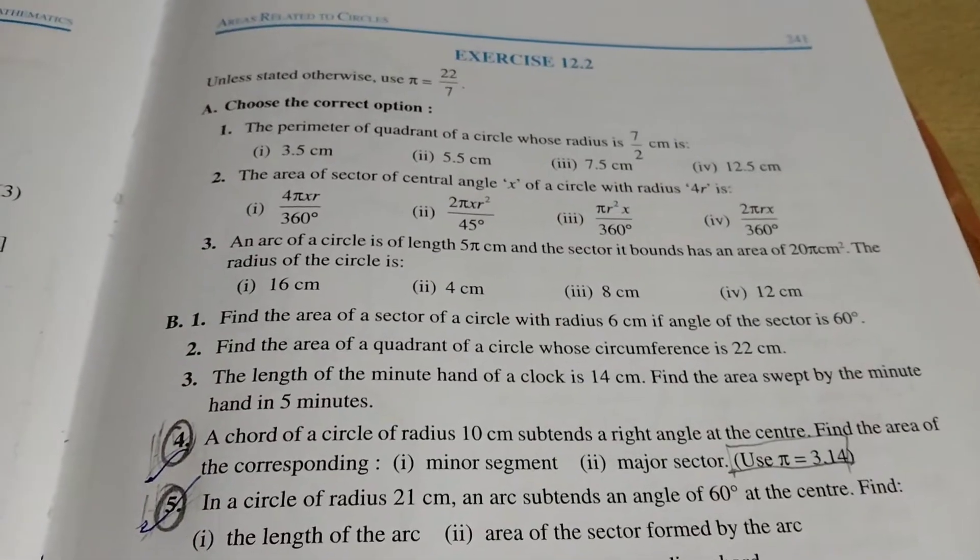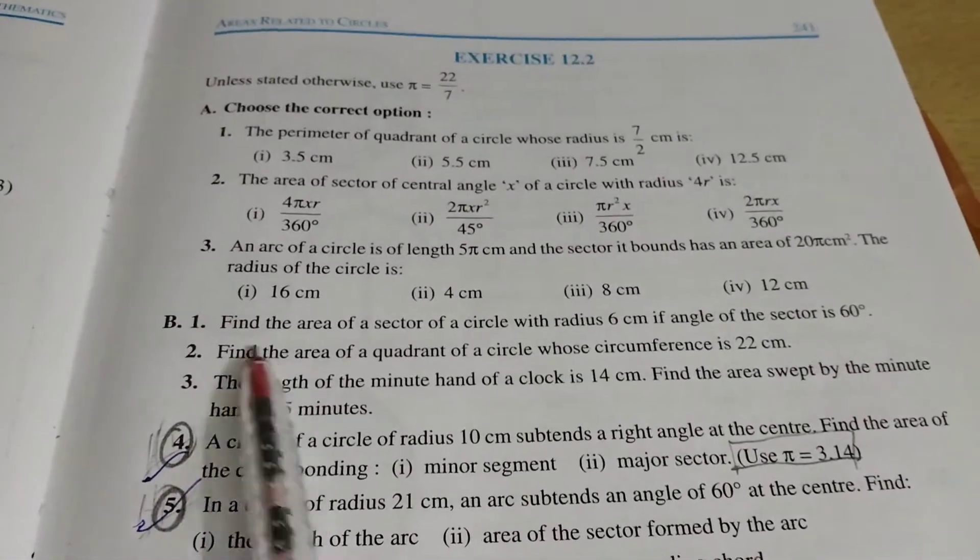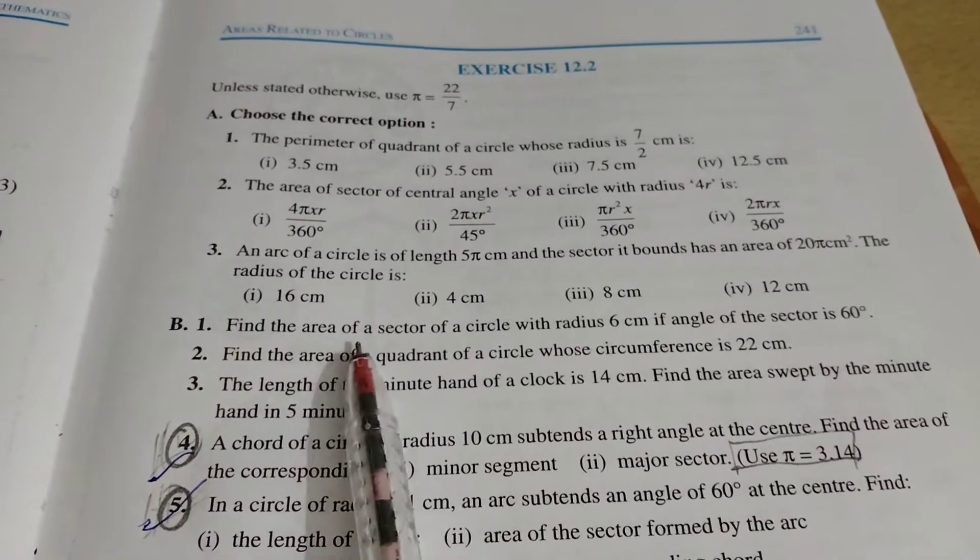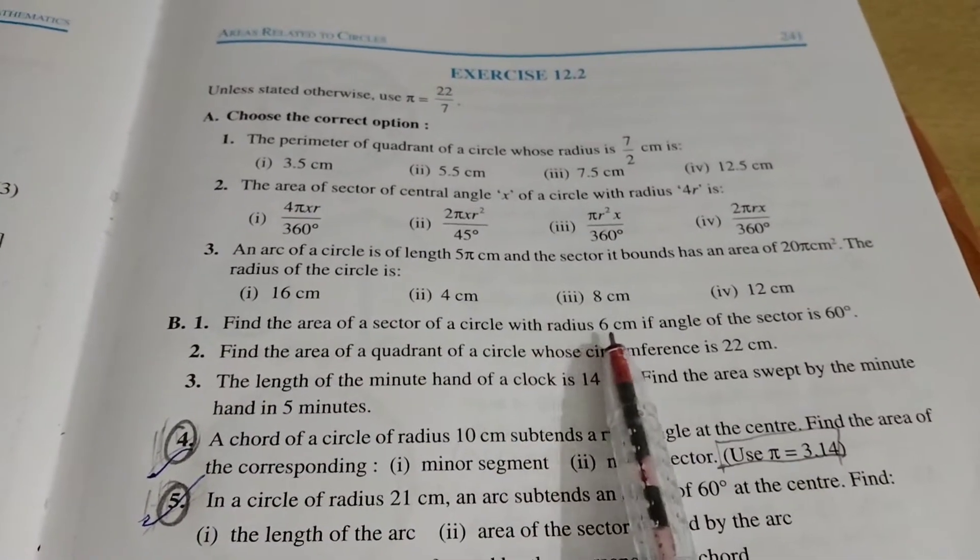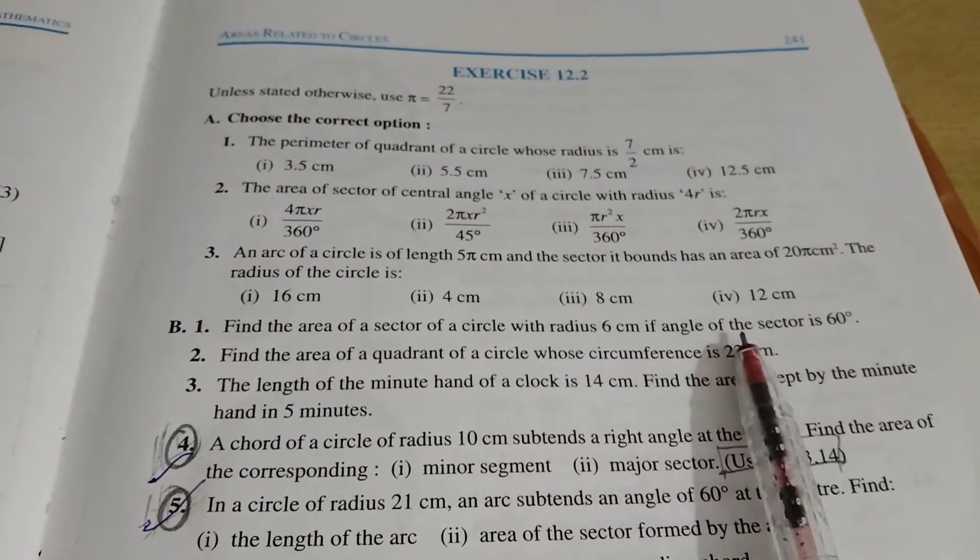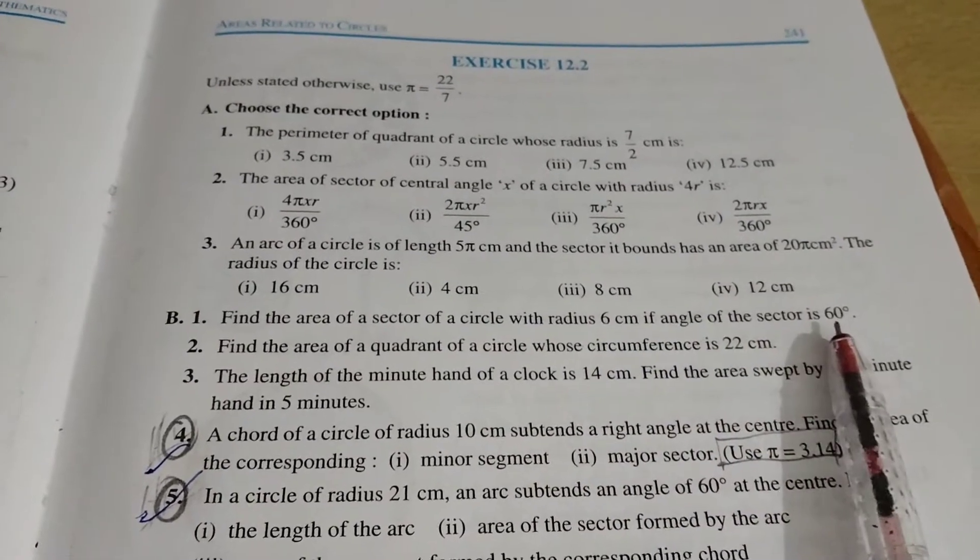Today we are going to do 12.2 B1. Find the area of a sector of a circle with radius 6 cm if angle of the sector is 60 degrees.